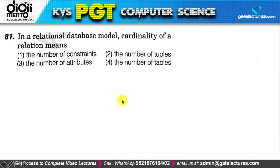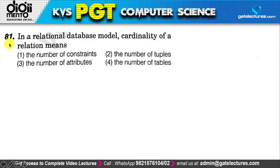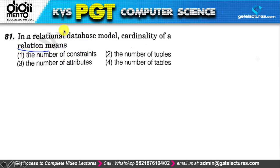Without further delay, let's start. We'll begin from question number 81. The 81st question is: in a relational database model, what does the cardinality of a relation mean? Note that cardinality of a relationship and cardinality of a relation are two different concepts. There are two ways to determine cardinality.